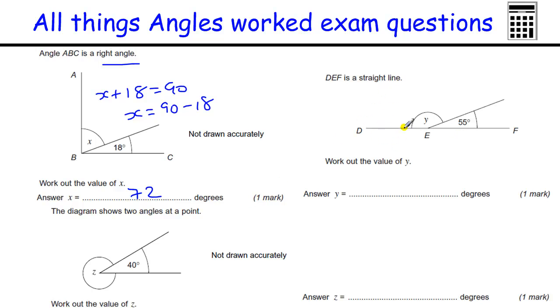Here we've got a straight line. Angles on a straight line add up to 180. That's the rule we need to use here. So Y plus 55 equals 180, so Y is going to be 180 minus 55, which is 125.